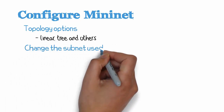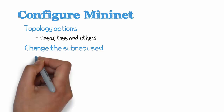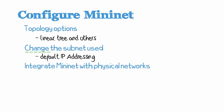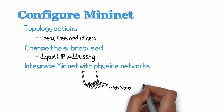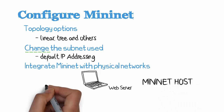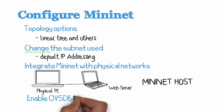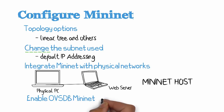I'll show you how to change the subnet that Mininet uses, so rather than using the default IP addressing of Mininet, change it to something else. I'll also show you how to integrate Mininet with physical networks — how you can run a web server on a Mininet host and connect to that web server from a physical PC. I'm also going to show you how to enable OVSDB on Mininet so that Mininet can be programmatically changed via an application. In this case, a GRE tunnel will automatically be configured programmatically on a Mininet switch so that traffic can be captured.